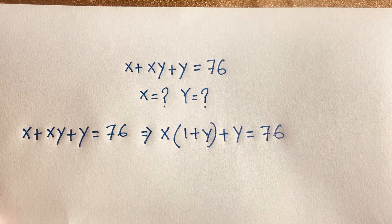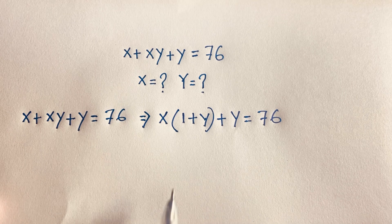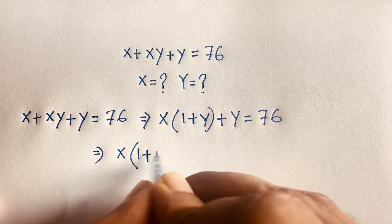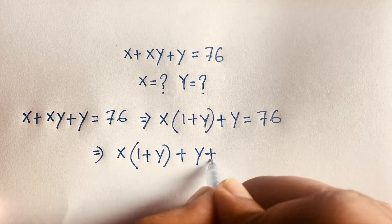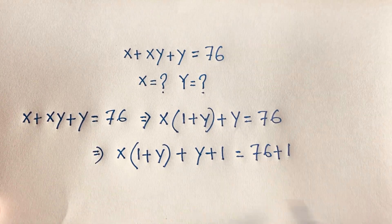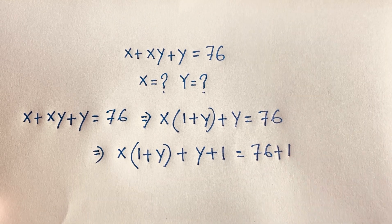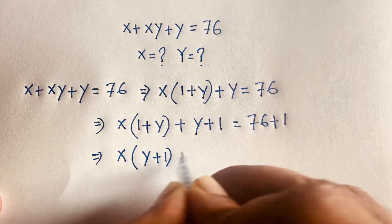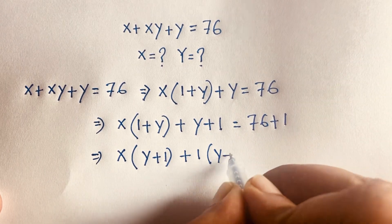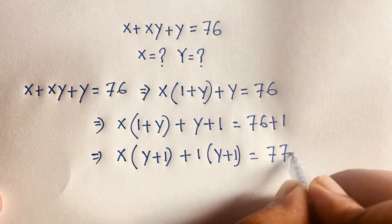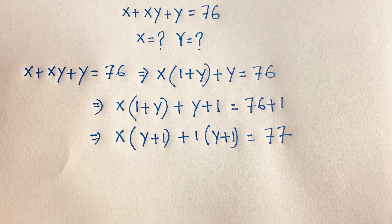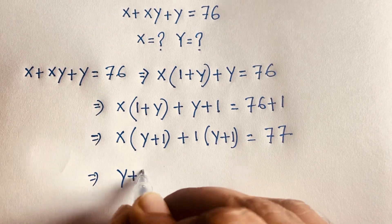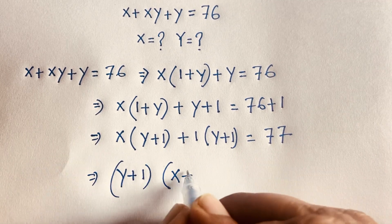Now I add 1 to both sides. Look: x times (1 plus y) plus y plus 1 is equal to 76 plus 1. This gives x times (y plus 1) plus (y plus 1) is equal to 77. I can see that (y plus 1) is common, so factoring gives (y plus 1)(x plus 1) is equal to 77.